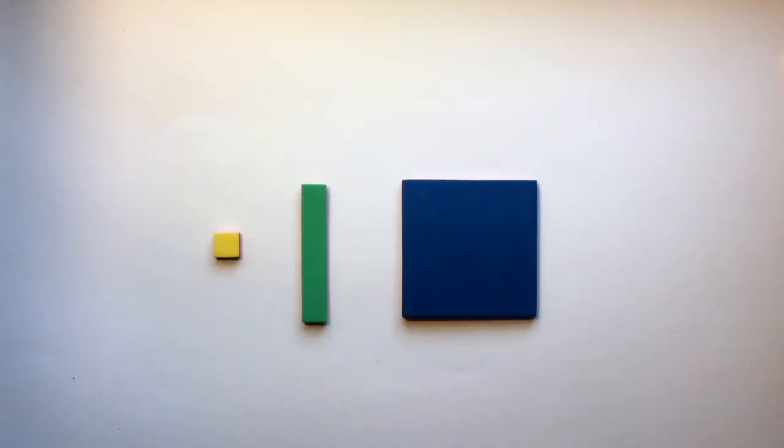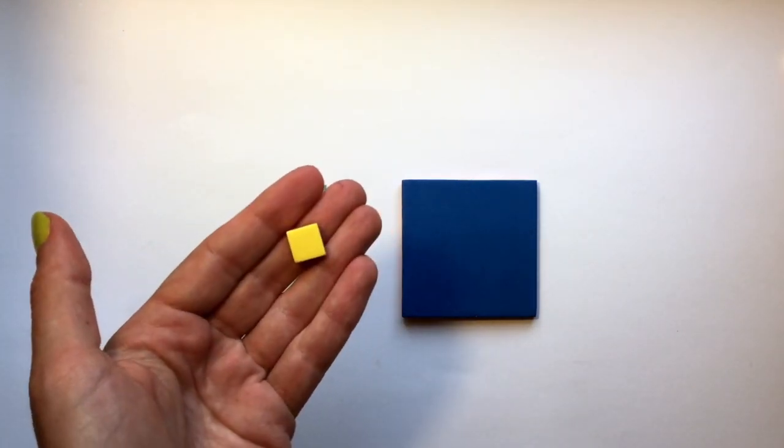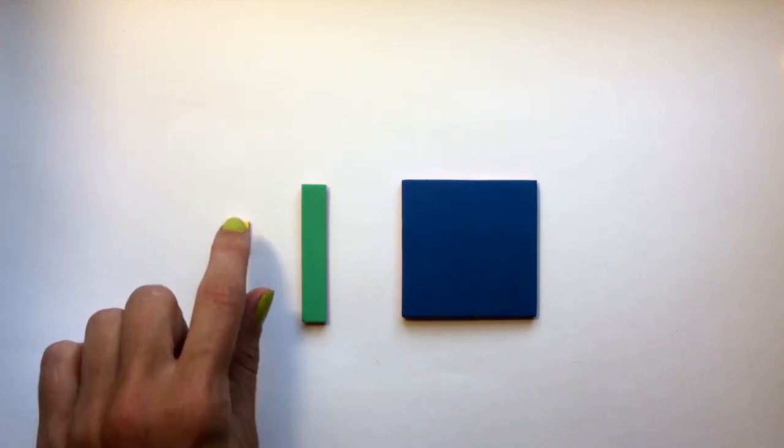First thing we need to do is identify our tiles. You have three different size tiles amongst your algebra tile pieces. The smallest one is representative of an integer, so you can think of that as one.